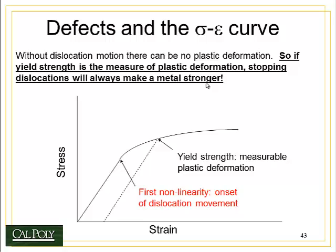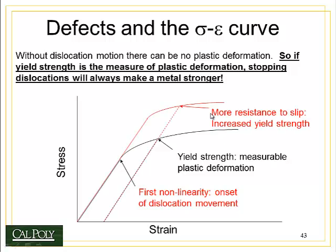Let's talk about how these defects can help us if we use them in the right way. Looking back at the stress-strain diagram, on the x-axis you have strain, on the y-axis you have stress. There's a linear portion representing the elastic region, and then a non-linear portion representing plastic deformation. The yield strength, defined by the 0.2% offset method, is the point of beginning of plastic deformation. To increase the strength of the material, we have to find a way to make it more difficult to move dislocations.